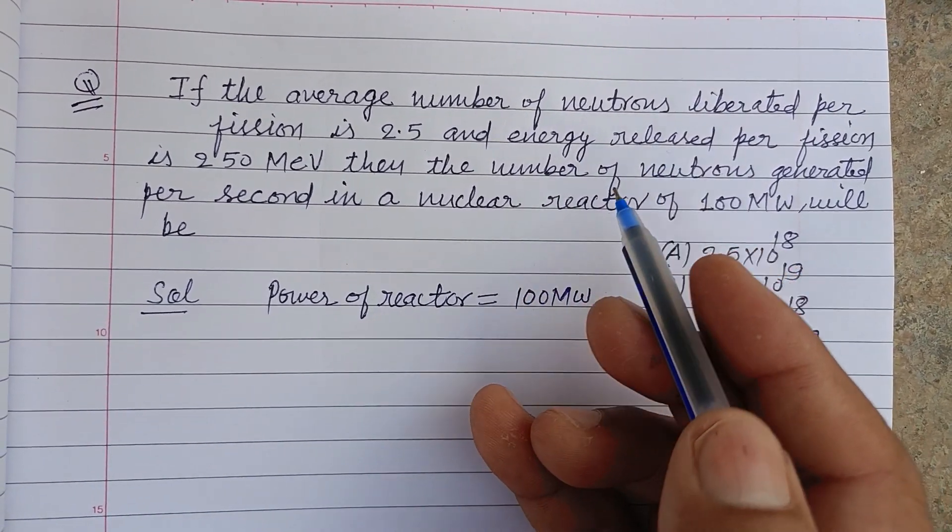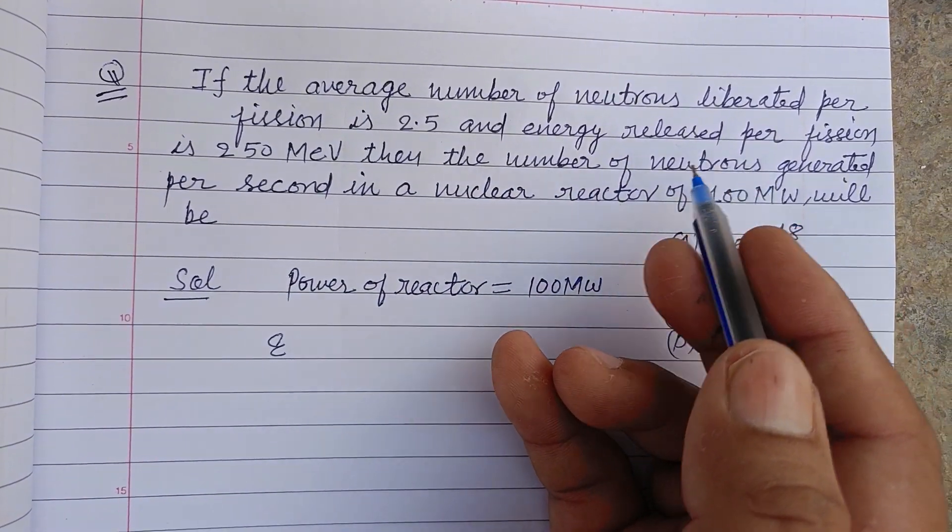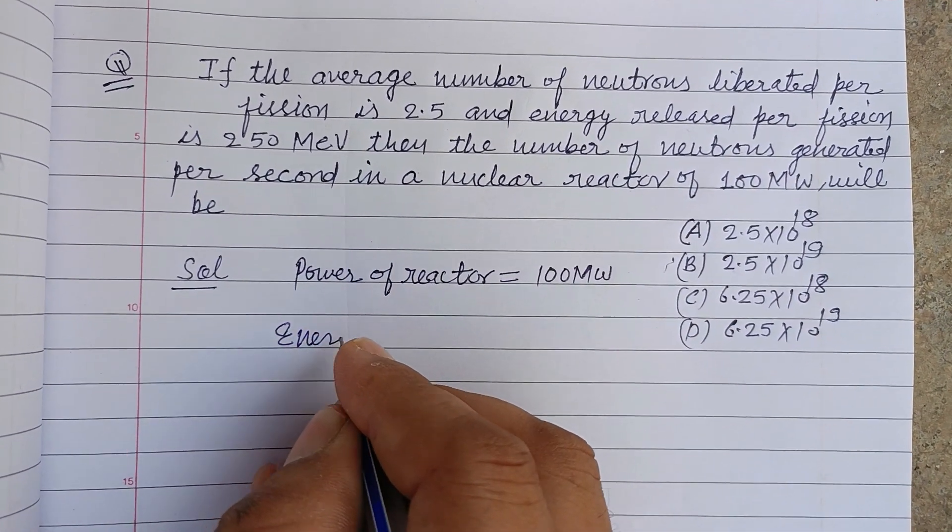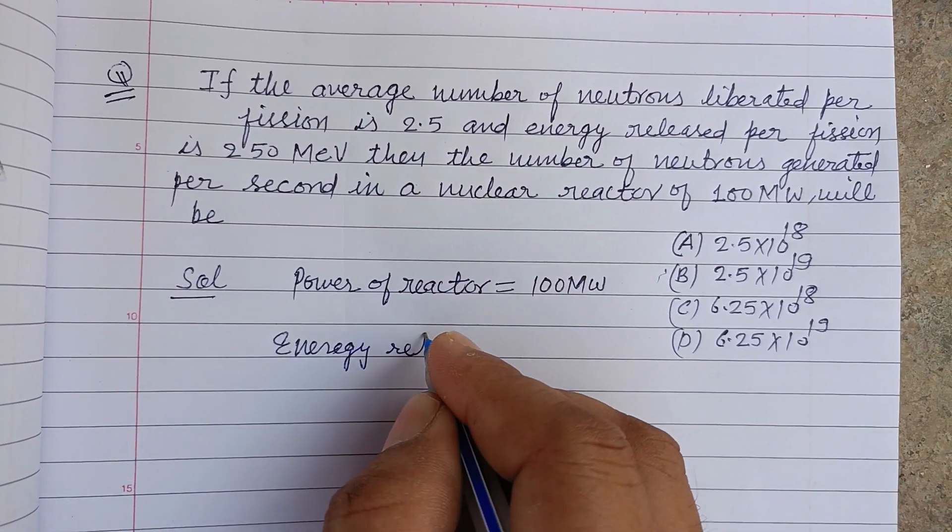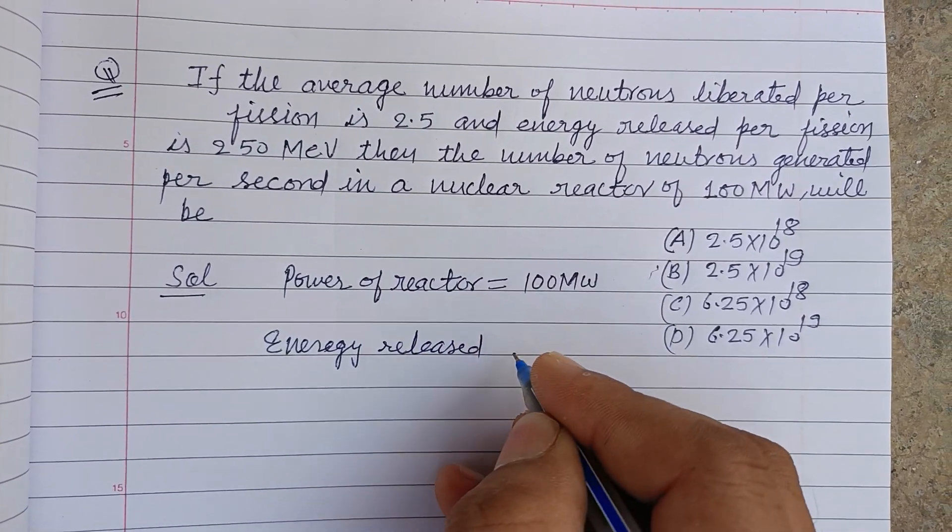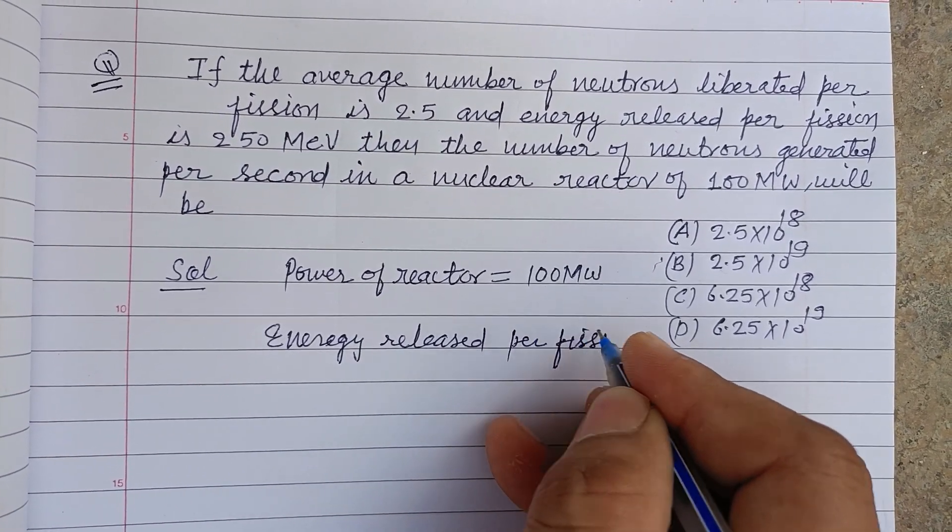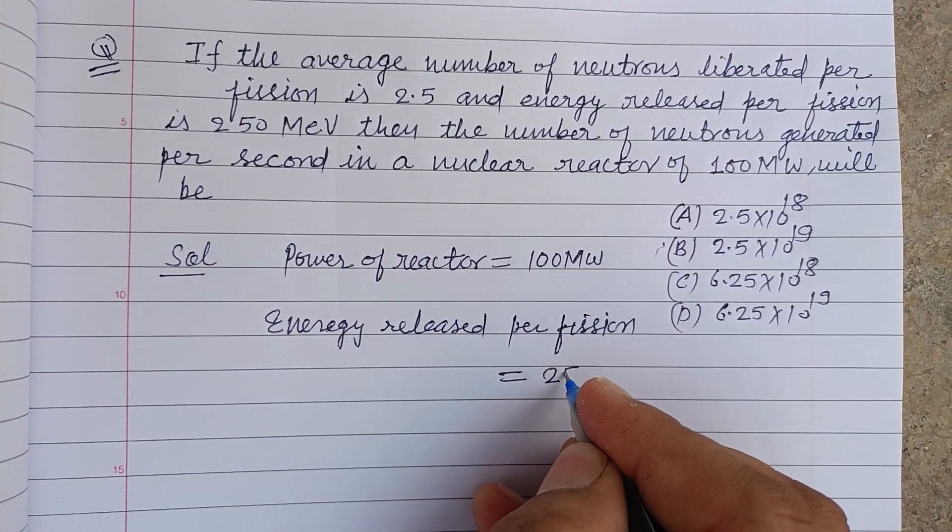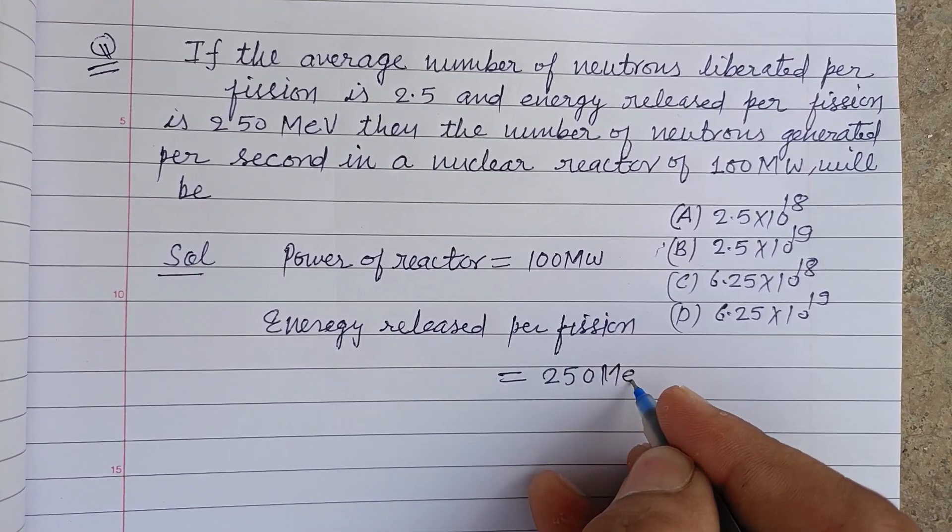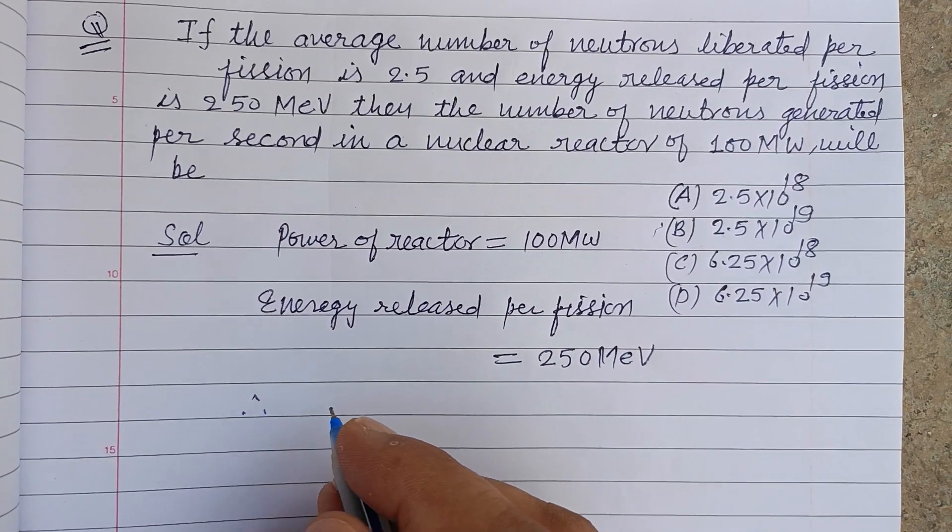Energy released per fission is given to us as 250 million electron volts. Therefore, number of nuclei